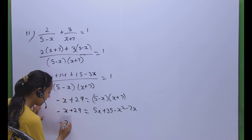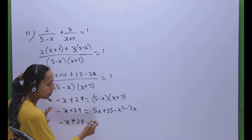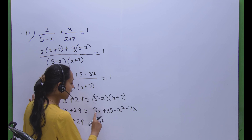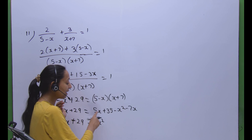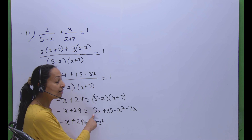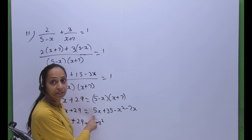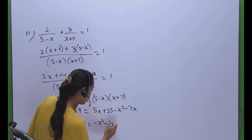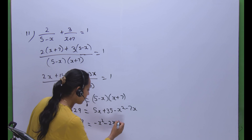Now we have minus x plus 29. Collecting like terms: minus x squared stays as it is; for 5x minus 7x we get minus 2x; and plus 35 stays alone.